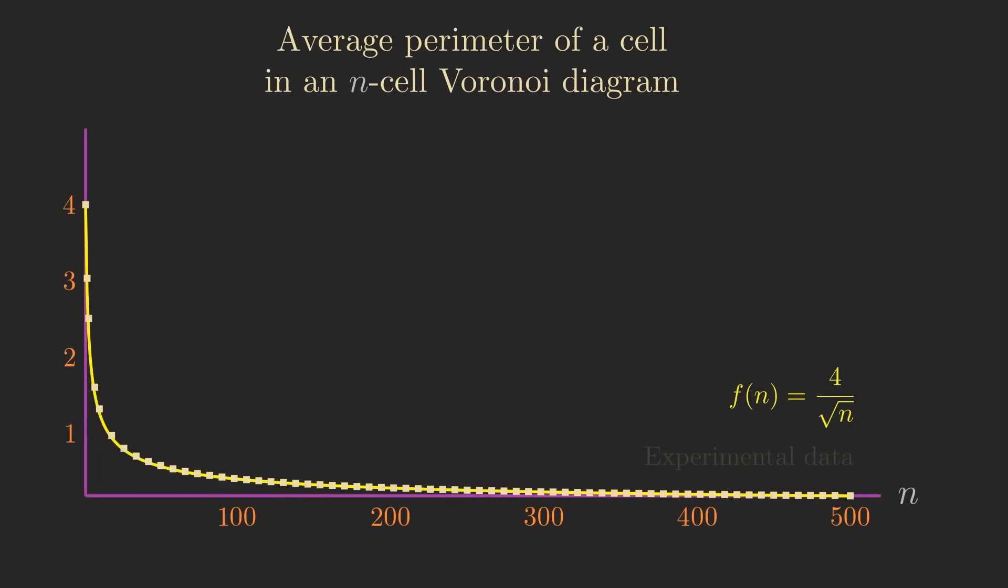I mean, in all fairness, 4 over square root of n can't possibly be too bad of an approximation. After all, it stays between 0 and 4 when n is greater than 1,